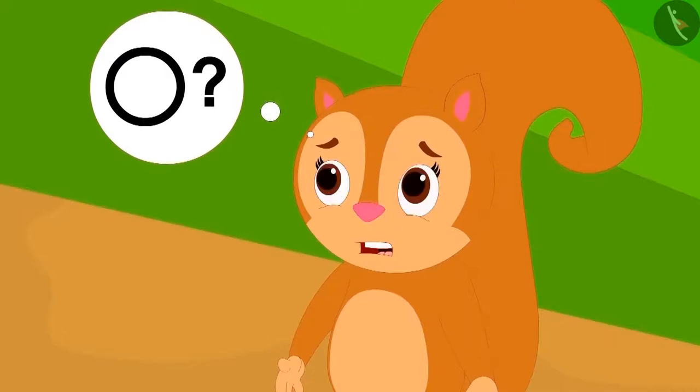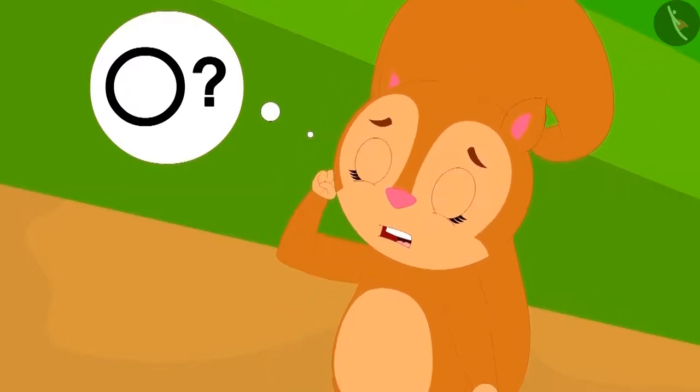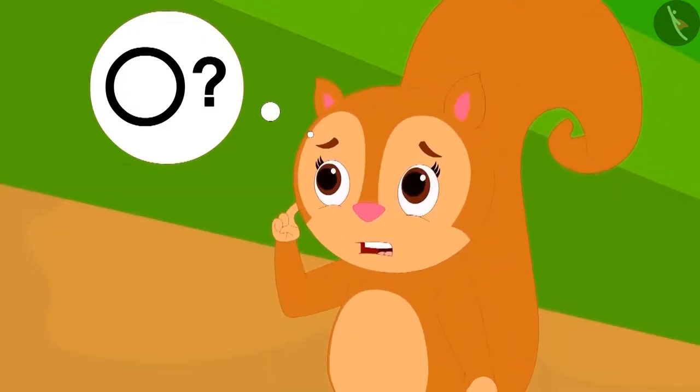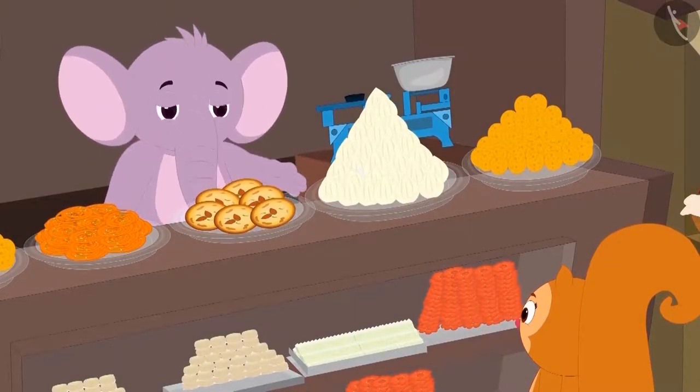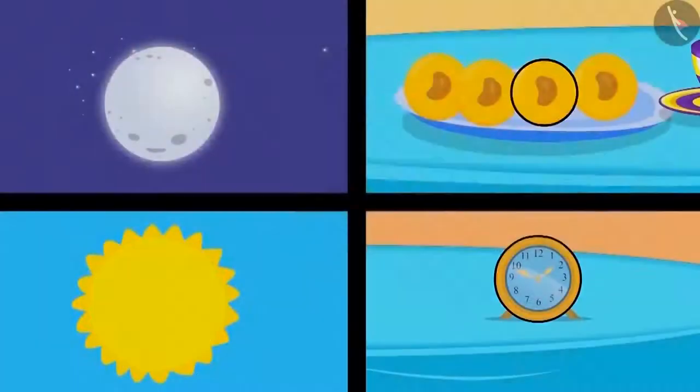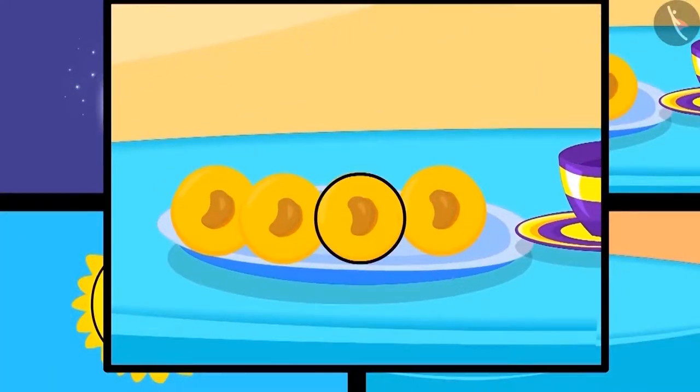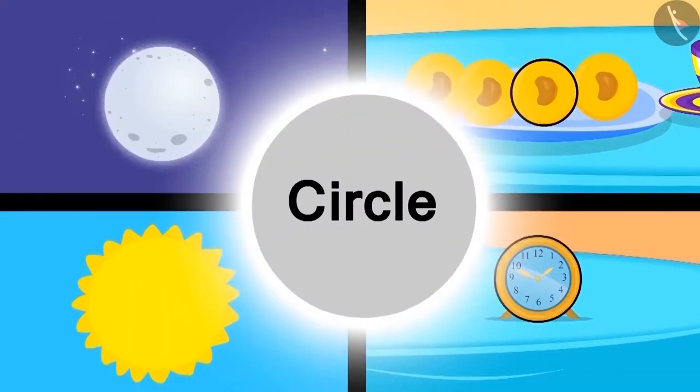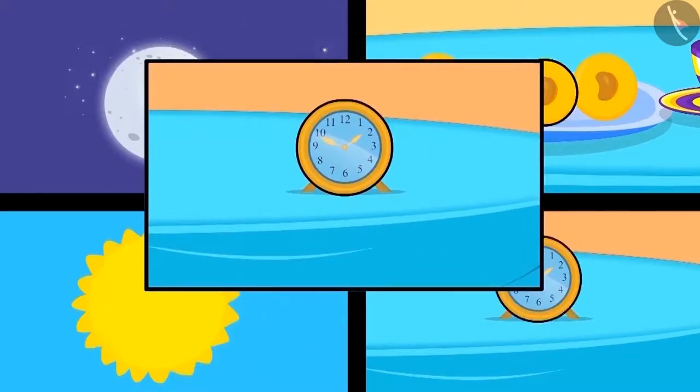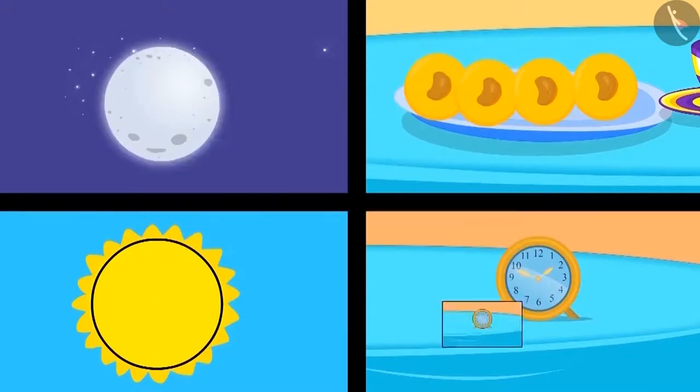But now she is thinking that where else does this circle shape appear other than the Peda? Appu explained this to Chanda through a poem. Like the Peda which is round, the moon and the sun are also round. Another name for round is a circle. Look at this picture of a round clock.